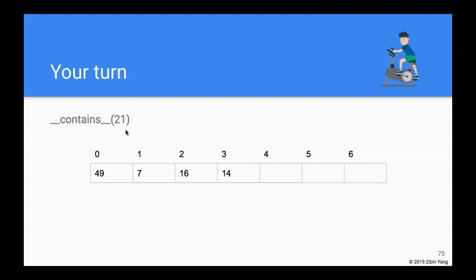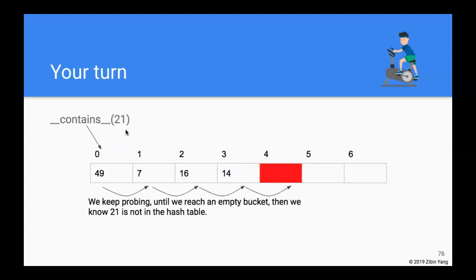What about looking up a number that's not in the hash table, such as 21? 21 hashes to bucket 0 — it's 49, not 21. We go to the next: 7, not right. Then 16, still not right. Then 14, still not 21. Then we reach an empty bucket, and since it's empty we know we've reached the end of where 21 can possibly be — so 21 is not in the table.